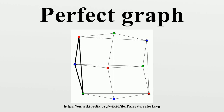In graph theory, a perfect graph is a graph in which the chromatic number of every induced subgraph equals the size of the largest clique of that subgraph. Due to the strong perfect graph theorem, perfect graphs are the same as Berge graphs. A graph G is a Berge graph if neither G nor its complement has an odd-length induced cycle of length 5 or more. The perfect graphs include many important families of graphs and serve to unify results relating colorings and cliques in those families.